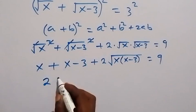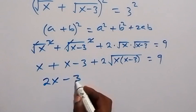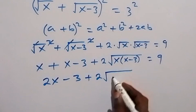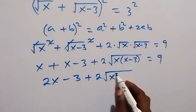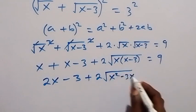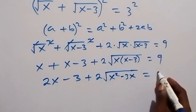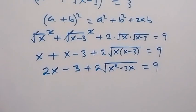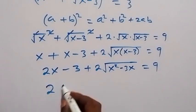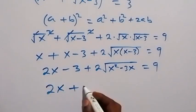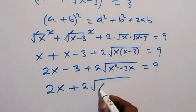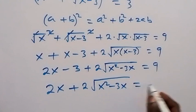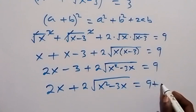From here we add x and x, that's 2x, then minus 3, plus 2 times root of x squared minus 3x, equals 9. Now let's take minus 3 to the other side, it becomes plus 3. So we have 2x plus 2 root of x squared minus 3x equals 9 plus 3.